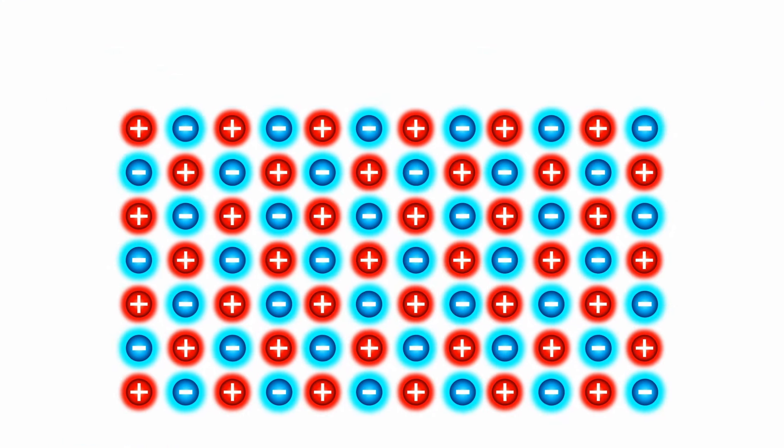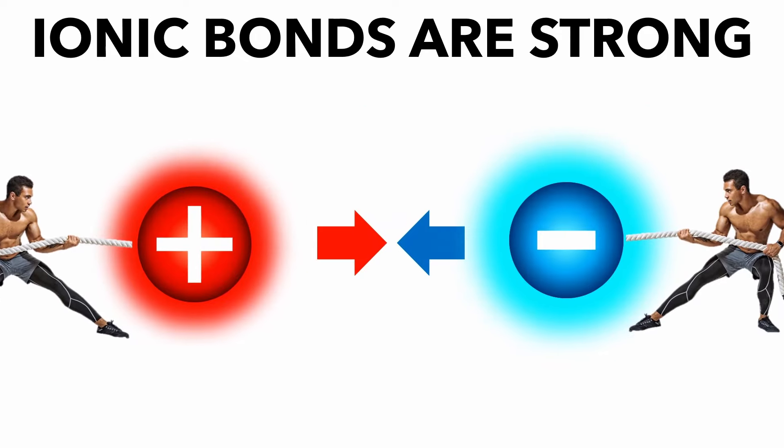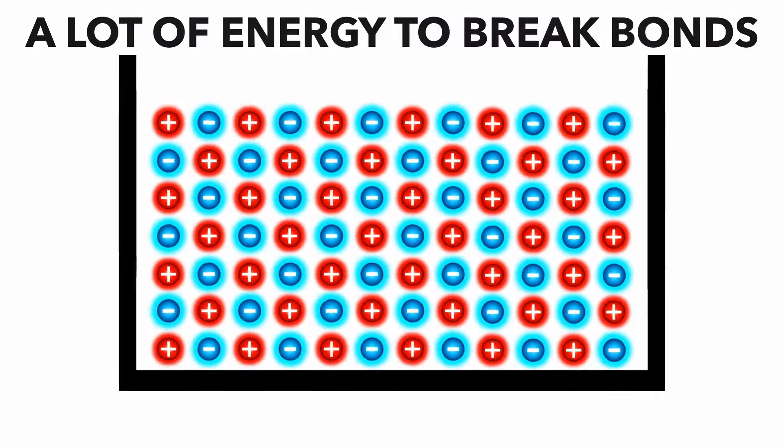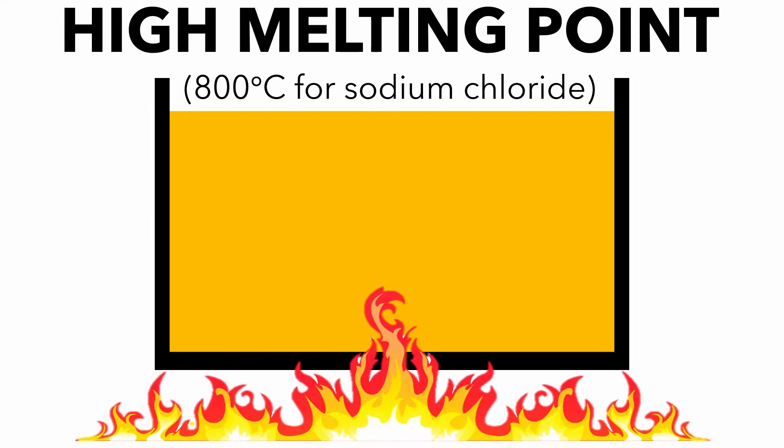Many ions attract to form a giant lattice structure. Ionic compounds have interesting properties. Because ionic bonds are strong and act in all directions in the lattice, it takes a lot of energy to break the ionic bonds, giving ionic compounds high melting points.